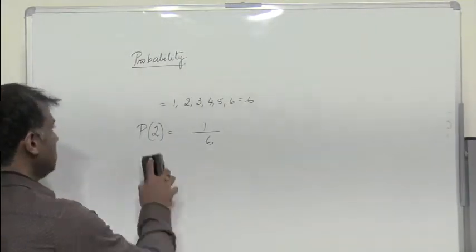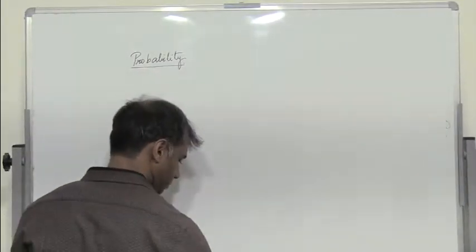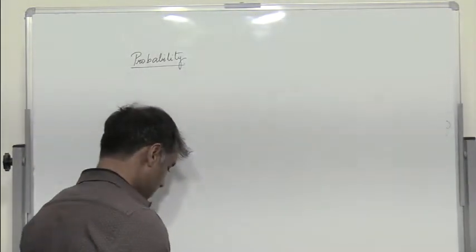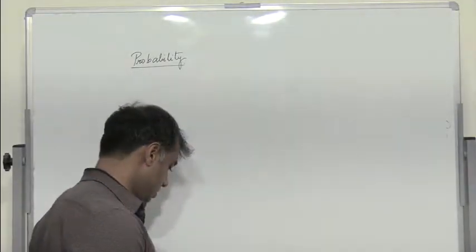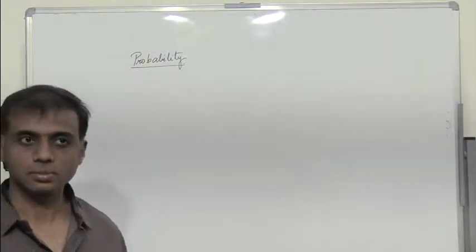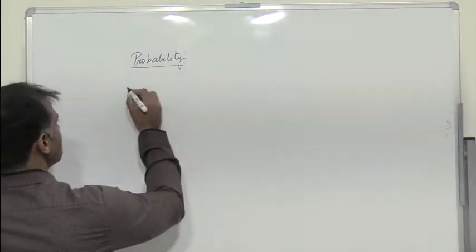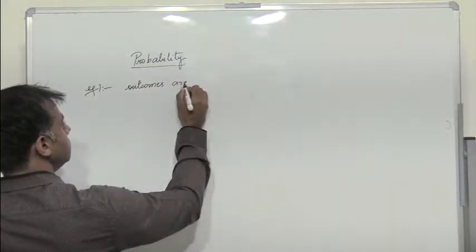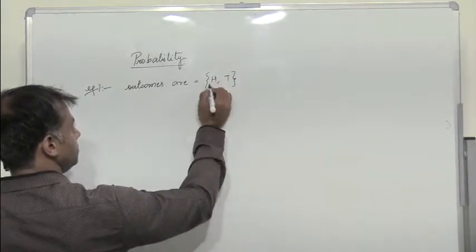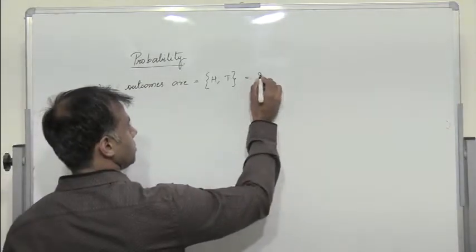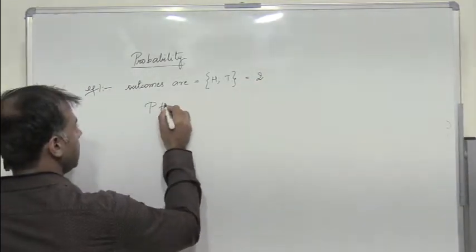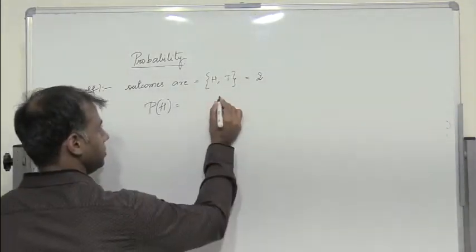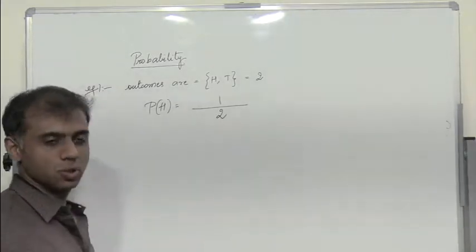So we start with the simplest of examples by taking a fair coin. I have a coin — we all know that a coin has two sides, which is head and tail. So what is the first example given? Find the probability of getting a head when a coin is tossed. Also find the probability of getting a tail. So I toss a coin. The possible outcomes — this is example one — are either I get a head or either I get a tail. So there are two possible outcomes.